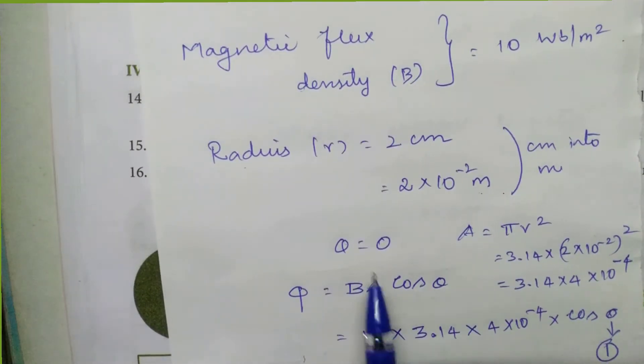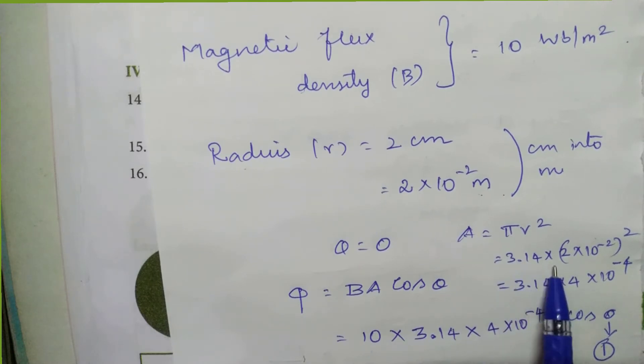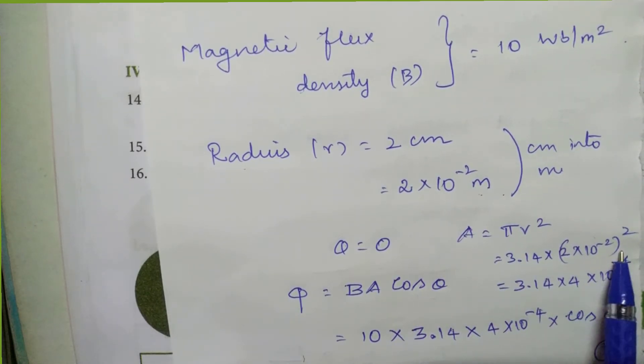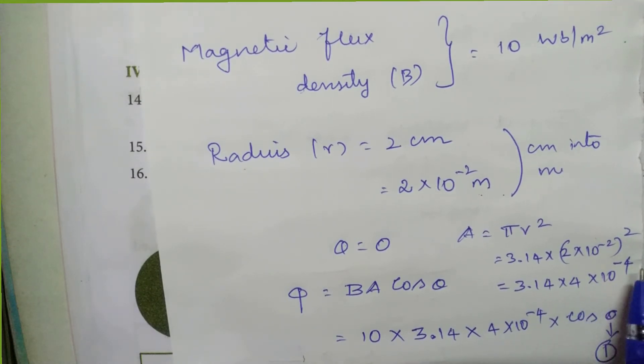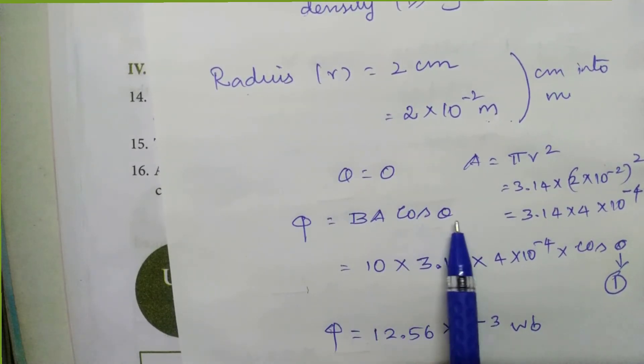What is given? Theta is equal to 0. We know A is equal to π r². What is the value of π? 3.14 into radius is 2 into 10⁻². Substitute this: 3.14 into 4 into 10⁻⁴.